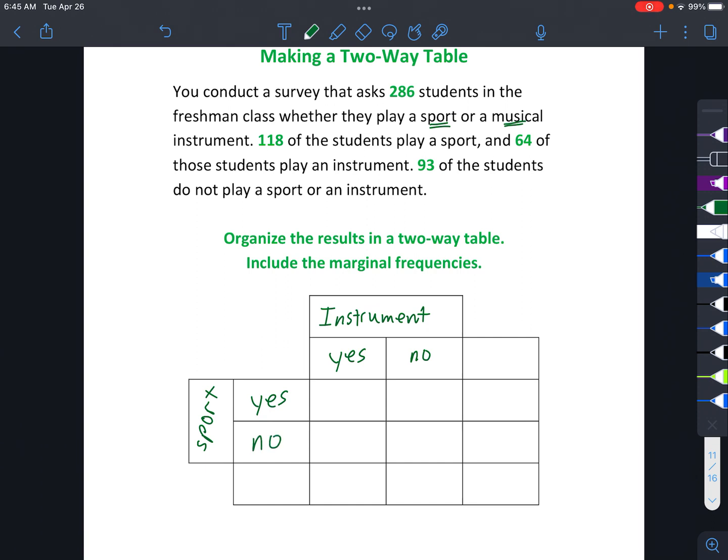And now we can start filling in those numbers. So you conduct a survey that asks 286 students in the freshman class. And actually, it's only the freshman class. That's right. I was thinking for a second that we had two different ages. But we're just talking about sports or musical instruments. So if it's 286 students total, and we don't have any other categories, then that actually goes over here in the corner. Because that's the total of the whole thing.